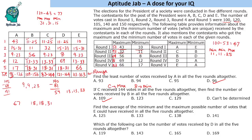Find the average of the minimum and maximum possible number of votes that E could have received in all 5 rounds altogether. We just find the average of the range bounds, which gives us 138.